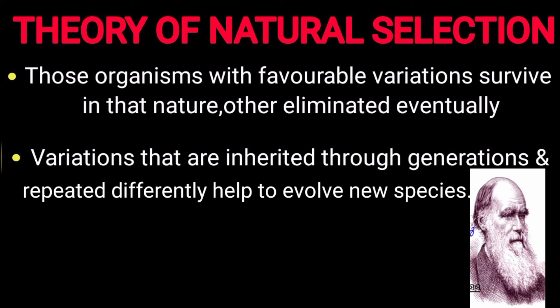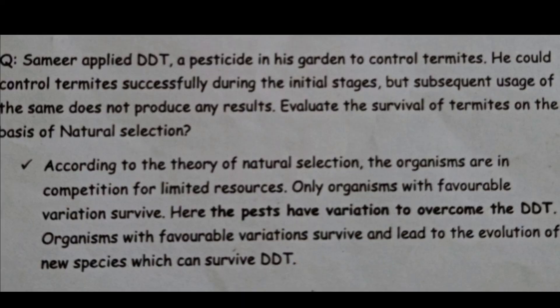Organisms with unfavorable variations will be eliminated. This process continues generation after generation, eventually leading to new species. For example, DDT pesticide use initially controlled insects, but through continuous usage, organisms with favorable variation survived, leading to new species resistant to DDT. This is the result of natural selection and the struggle for existence. Hope all are clear — keep studying, have a nice day!